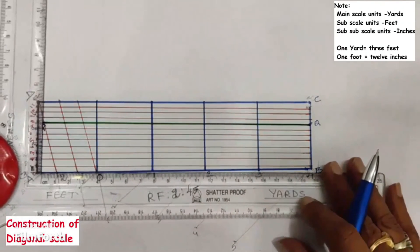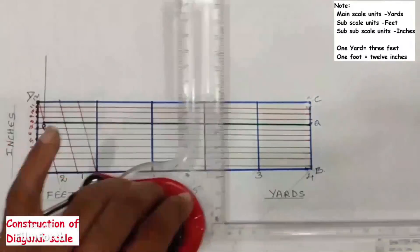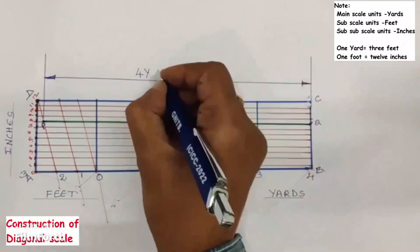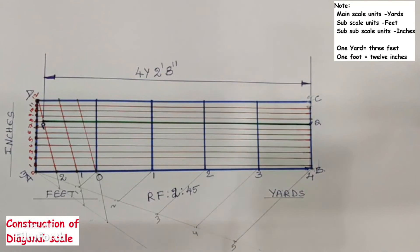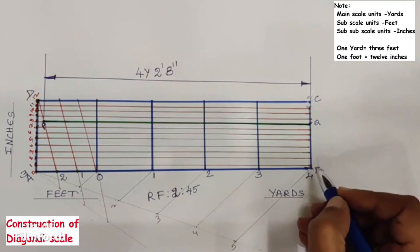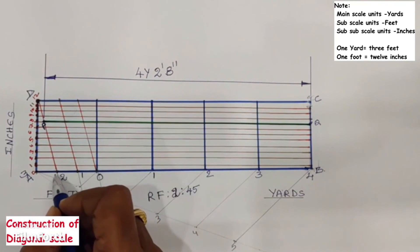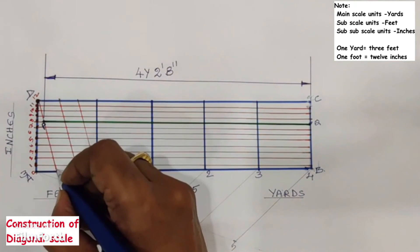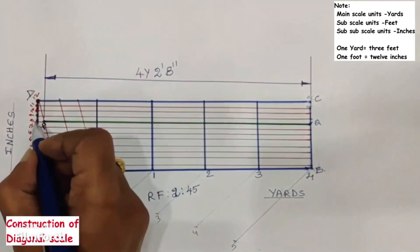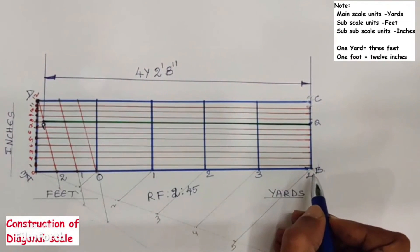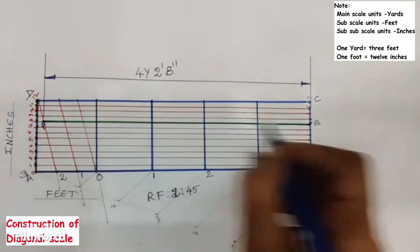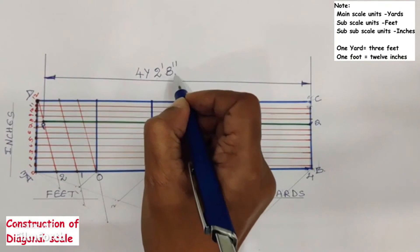Now I will explain how to mark 4 yards 2 feet 8 inches on this scale. From 0 in the rightward direction take 4 units, and from 0 in the leftward direction take 2 units. Along the diagonal line move up to the 8th division — this point is P. Draw a line parallel to AB passing through P; this line cuts BC at Q. The PQ distance indicates 4 yards 2 feet and 8 inches.